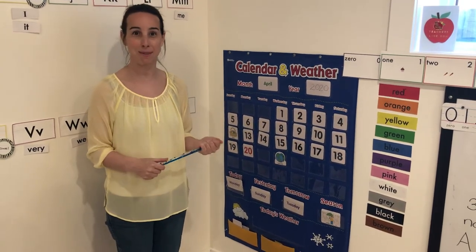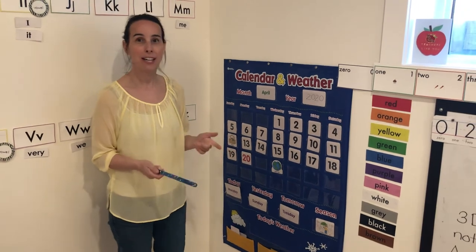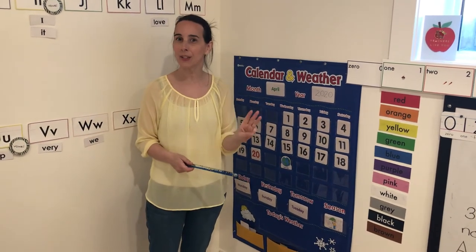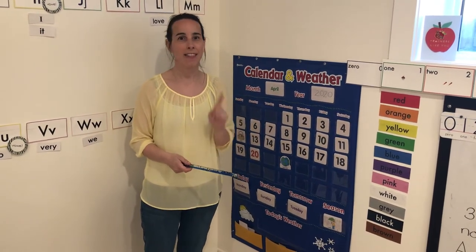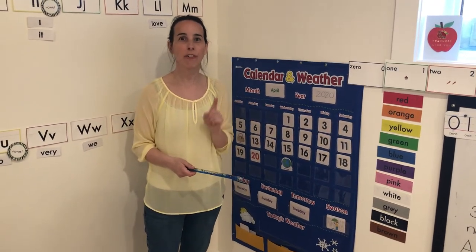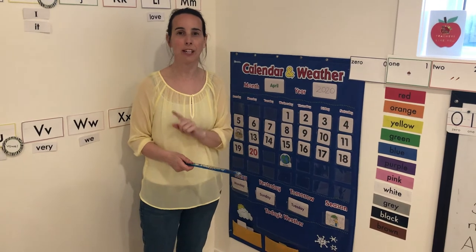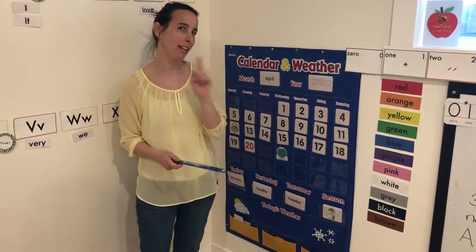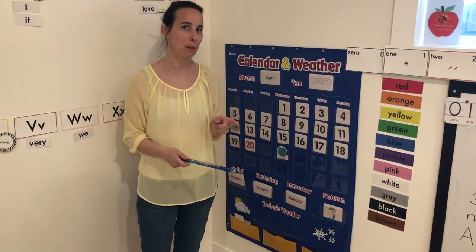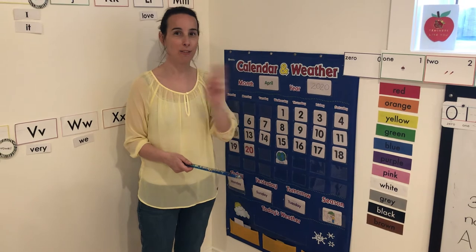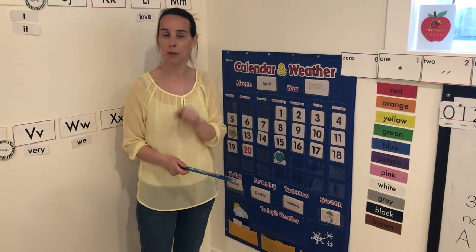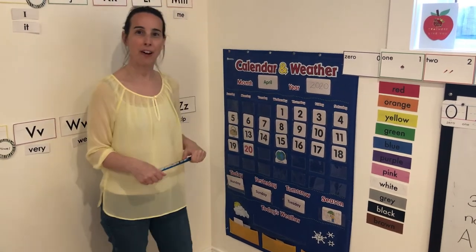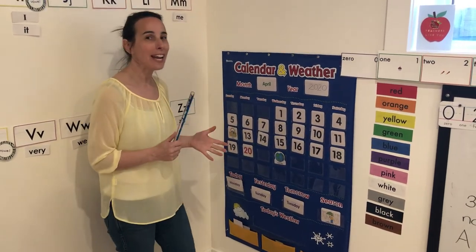From now on we're going to start doing a magic number. I'm going to give you three clues and then you have to try to figure out what the magic number is. Tomorrow I'll tell you what the magic number was and give you three more clues to a new magic number — so it's going to be fun!